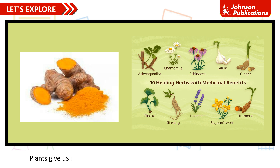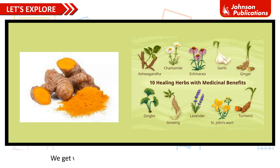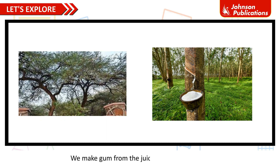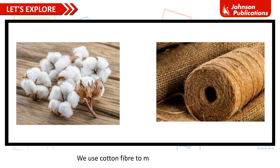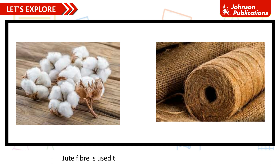Plants give us medicines. Turmeric is a natural antibiotic — it heals wounds. We get wood from trees. We make paper from the bamboo plant. We make gum from the juice of the keeker tree. We make rubber from the juice of the rubber tree. We use cotton fiber to make cotton clothes. Jute fiber is used to make sacks, ropes, mats and bags.